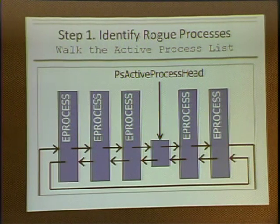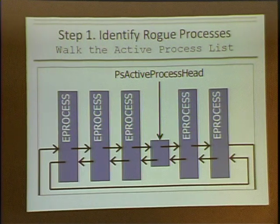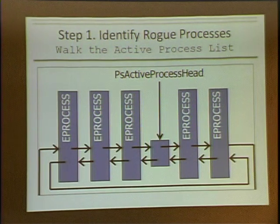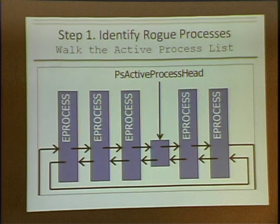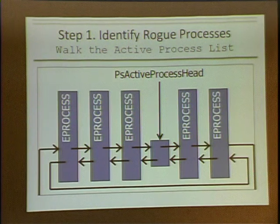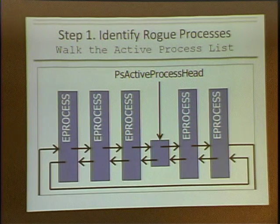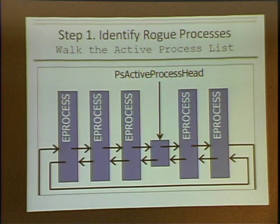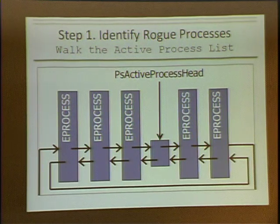How many of you are familiar with the active process list — the doubly linked list of processes? When you hit a box and run task list or PS list, you're actually walking the doubly linked list of processes, what the system thinks it has running. It starts with the PS active process head and walks that doubly linked list. Can this be lied to? Of course it can — that's why we rely on scanning.